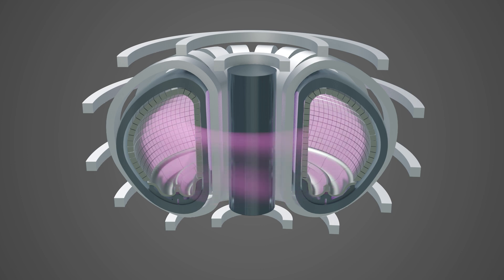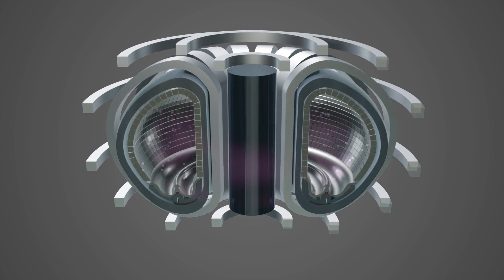This fusion reaction also creates neutrons which stream out from the plasma at high energy and pass through the first wall of the tokamak.